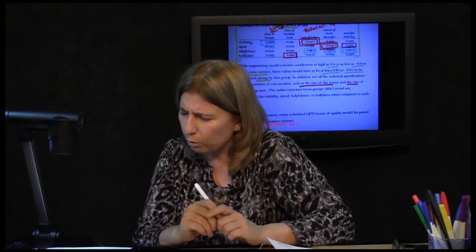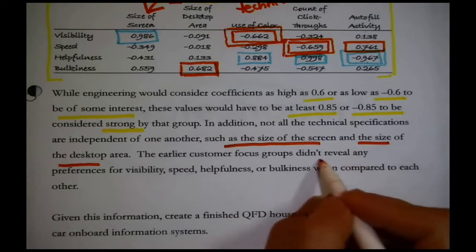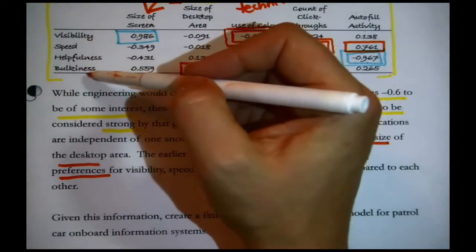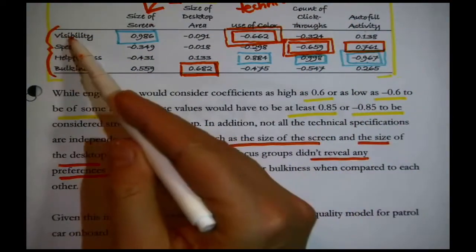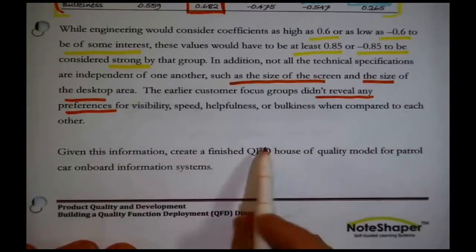So the larger you make one thing, the smaller you have to make something else. Okay. Alright. This is just facts right now. We're just staging facts. What else? Earlier focus groups didn't reveal any preference for visibility, speed, helpfulness, or bulkiness. This is the customer's value features right here. And they're saying the customers didn't really have any strong preferences among them. Alright. Given this information, create a finished QFD house of quality model for the patrol car onboard information system.